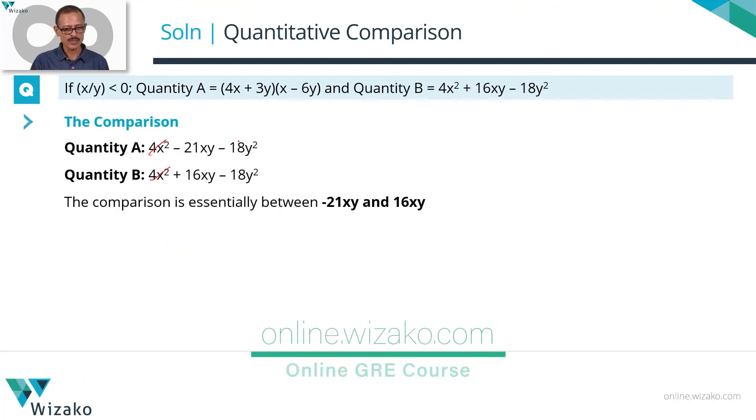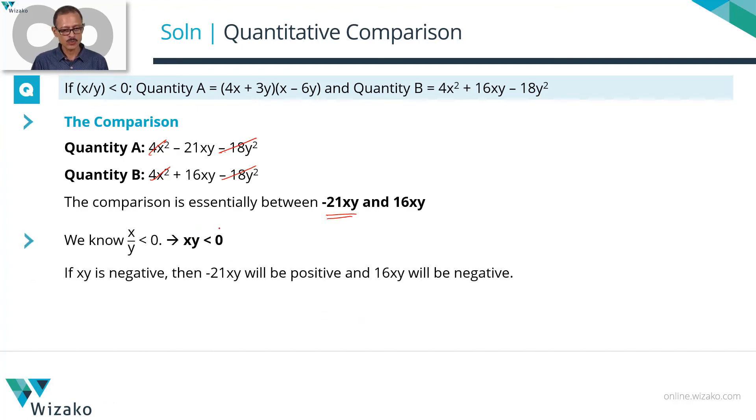So basically writing them side by side to understand what is all common, let's eliminate the common terms. The comparison basically boils down to -21xy and 16xy. If x upon y is negative, xy will be negative.